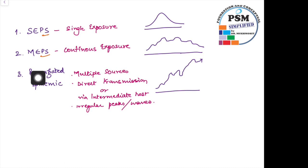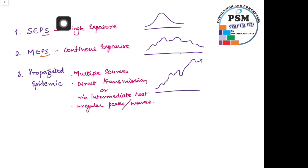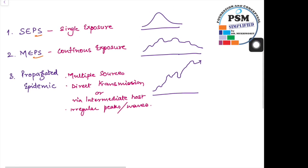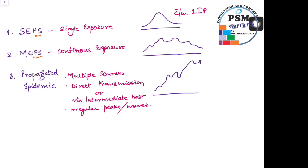In a propagated epidemic, there is not a single source but multiple sources. In a single exposure point source (SEPS), all the cases are going to happen within one incubation period — that is the hallmark of SEPS. A typical example would be food poisoning, where a contaminated meal is taken.